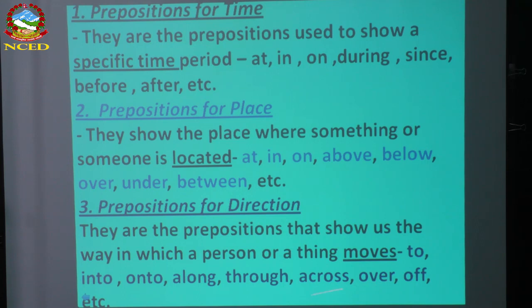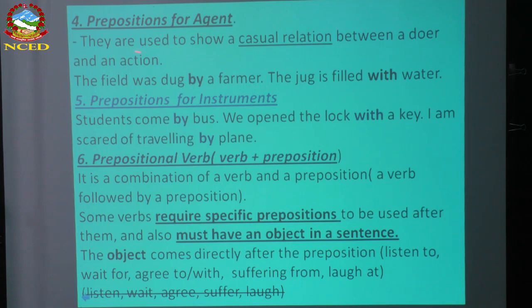Prepositions of agent — agent means a causal relationship; one causes the other. It means one is because of the other. For example, 'the dog is filled with water' — water is there because of a job, because of a causal relationship. They show a causal relationship between a doer and an action, like 'dug by a farmer.'